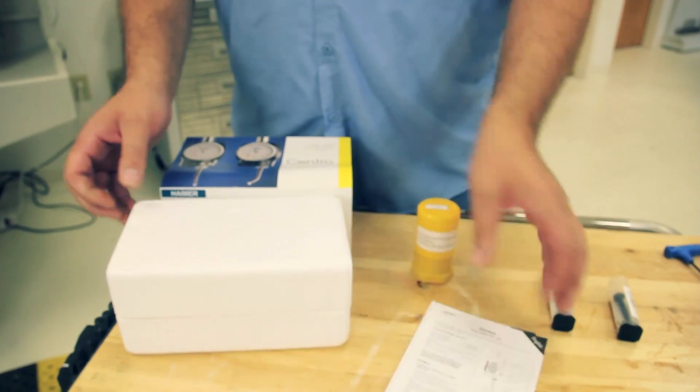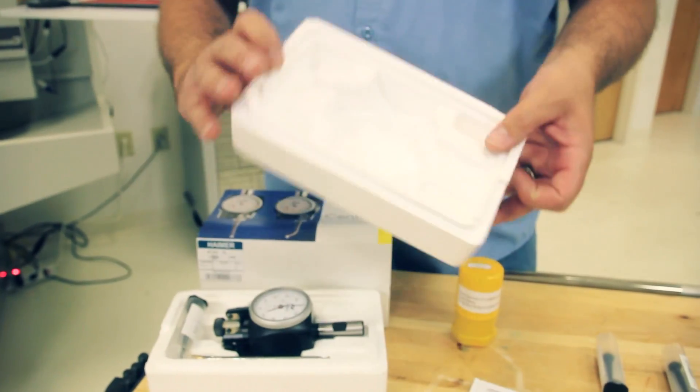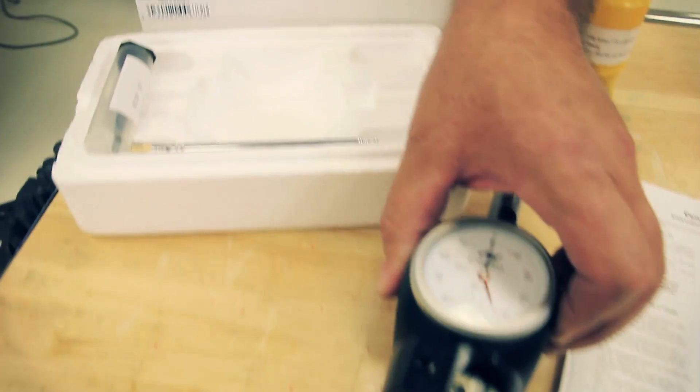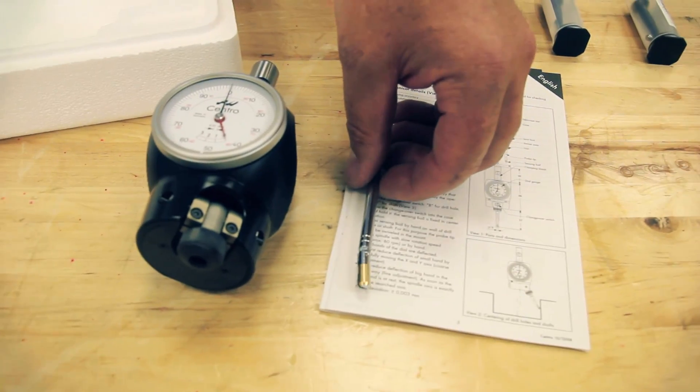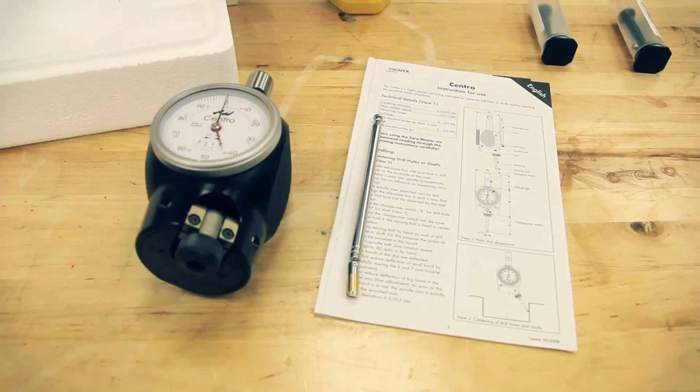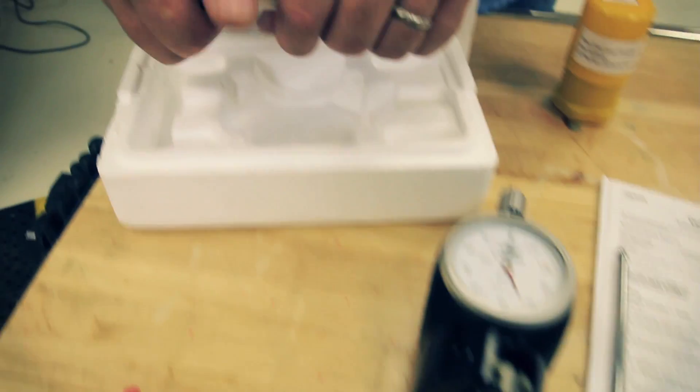In the box, instructions. You have the indicator body itself. This is the arm that keeps the indicator from rotating. And here's the tip that comes with the indicator.